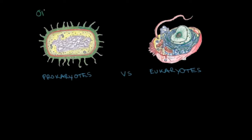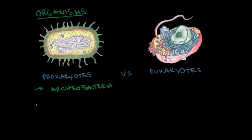The first comparison is based on the organisms where you can find prokaryotes and eukaryotes. Prokaryotes are found in unicellular organisms called bacteria — specifically archaeobacteria and eubacteria. Examples include Staphylococcus aureus, which you've probably heard about in the context of infections, and E. coli.